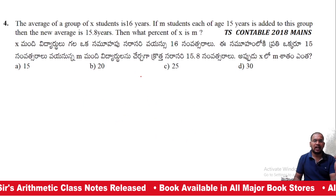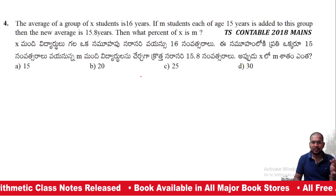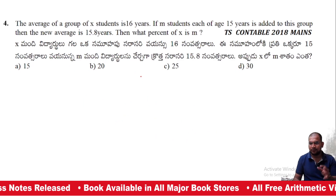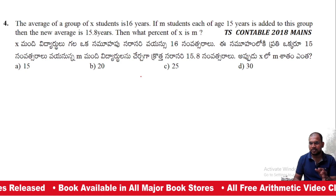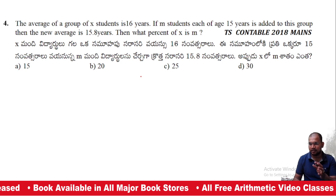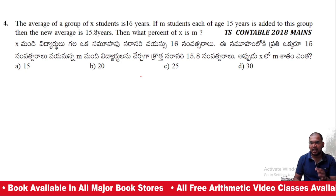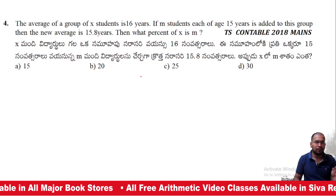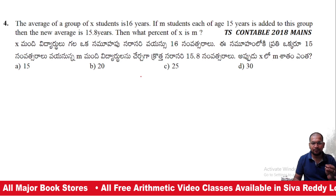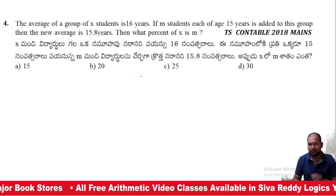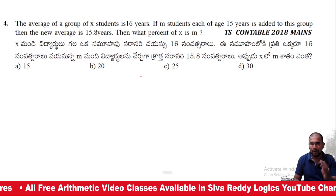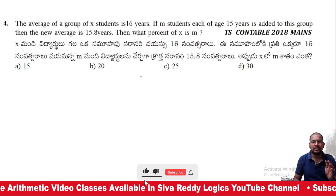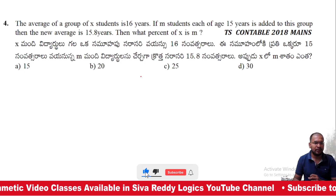The average age of a group of X students is 16 years. If M students each of age 15 years are added to another group, their average becomes 15.8. Then what percentage of X is M?